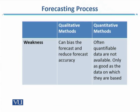There are weaknesses to each method. In the qualitative method, it can bias the forecast and reduce forecast accuracy because it is based on human judgment and opinions, so biases will always occur. However, its strength is the flexibility to incorporate changes based on a changing environment. On the other hand, the weakness of the quantitative method is that quantifiable data is often not available, and the forecast is only as good as the data on which it is based — so until data quality improves, the forecasting quality will not improve either. No matter what type of forecasting method you use, you must know the characteristics, strengths, and weaknesses of each forecasting method.